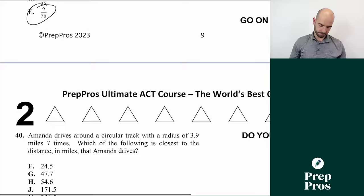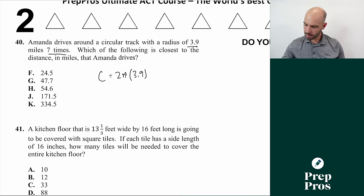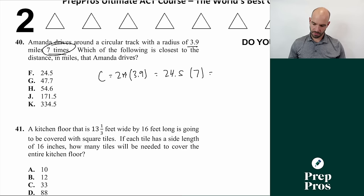Number forty: Amanda drives around a circular track with a radius of 3.9 miles 7 times. Find the circumference first: 2 pi times 3.9 equals approximately 24.5 miles. Multiply by 7 laps to get approximately 171.5 miles. The answer is J.